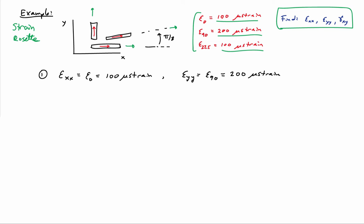The normal strains in the x and y directions are trivial because we have strain gauges in those directions. So epsilon xx equals epsilon zero, which is 100 microstrain, and epsilon yy equals epsilon 90, which is 200 microstrain. We immediately know the normal strains in the x and y directions. The only remaining unknown is the shear strain in the xy direction.